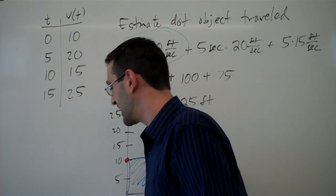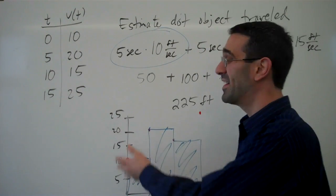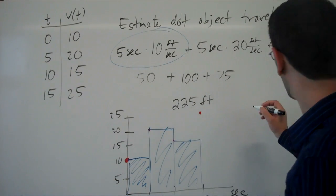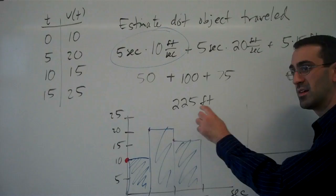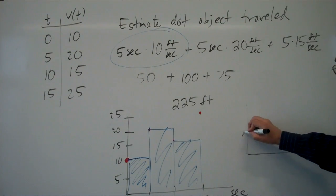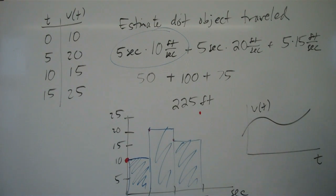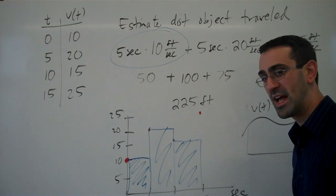So now the question becomes, we can do that using a table of data, but what would happen if my velocity function was not some set of data points, but instead was some smooth curve? What do we do then? And that's what we'll look at next.